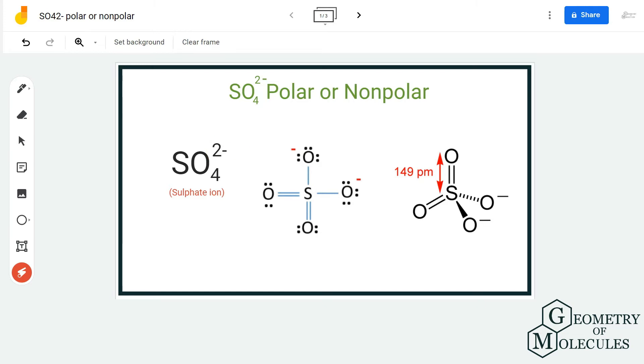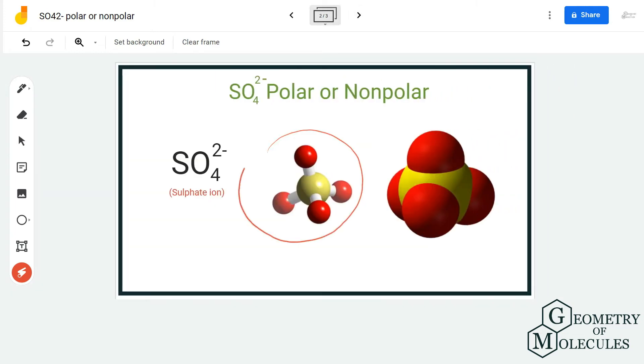its shape and find out the polarity. The molecule has tetrahedral geometry as four atoms of oxygen are arranged like this in SO4 2-. And as the shape is quite symmetrical, there are very low chances of polarity